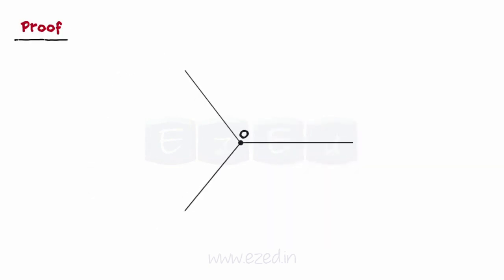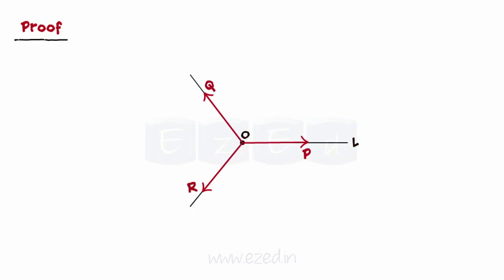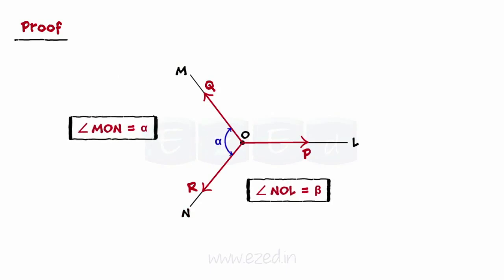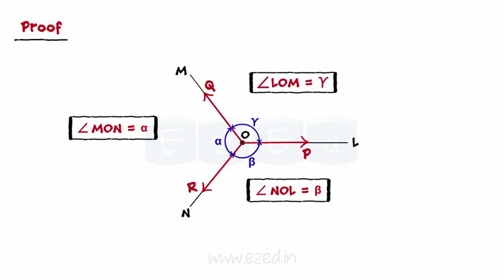Let's prove Lamy's theorem. Let P, Q, R be the three forces acting at O along the lines OL, OM, ON respectively, and angle MON is alpha, angle NOL is beta, and angle LOM equals gamma.